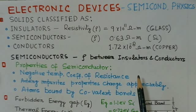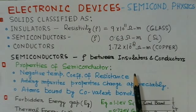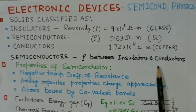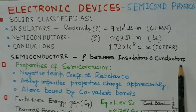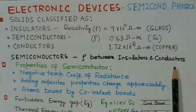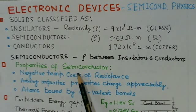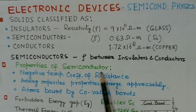The resistivity, which is the inverse of conductivity, is in between insulators and conductors for semiconductor materials. So semiconductors have conductivity or resistivity between insulators and conductors, and we are more interested in finding the properties of semiconductors.